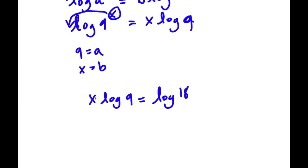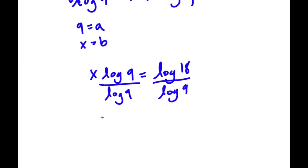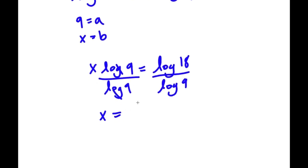Now we want to isolate x, so I'm going to go ahead and divide log 9 on both sides. So now I have x is equal to — because these two cancel out — log 18 over log 9.